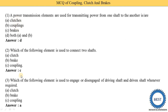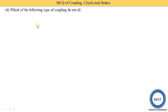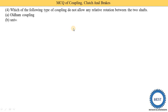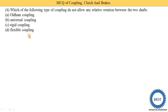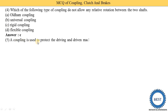Which of the following types of coupling does not allow any relative motion between two shafts? Options: Oldham coupling, universal coupling, rigid coupling, and flexible coupling. Rigid coupling does not allow any relative motion between two shafts, so option C is the correct answer.